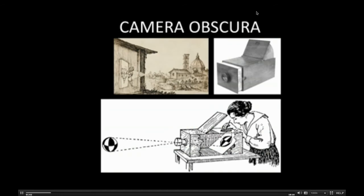The origins of photography can be traced back to the camera obscura, or dark room as translated from the Latin, which was used from around 400 BC and first mentioned by Aristotle. It was a darkened room with a small hole in one wall. The image would be projected through this tiny hole upside down on a screen, and an artist could sketch or draw it. It was used by da Vinci and other artists to create drawings with perfect perspective.